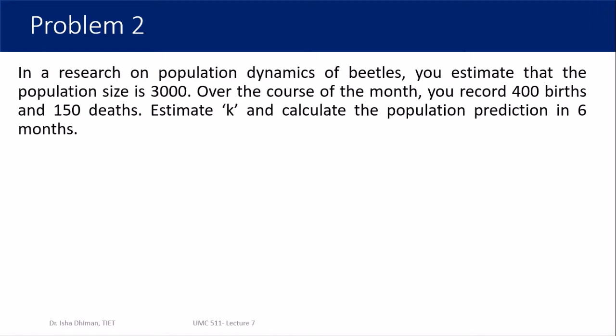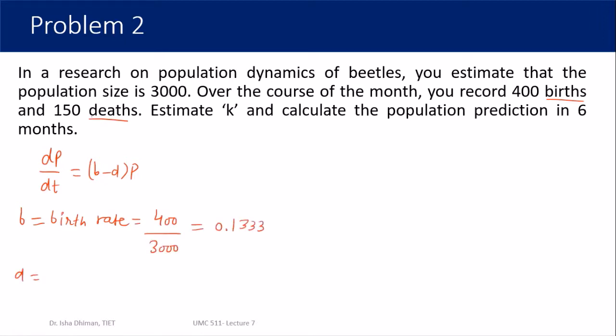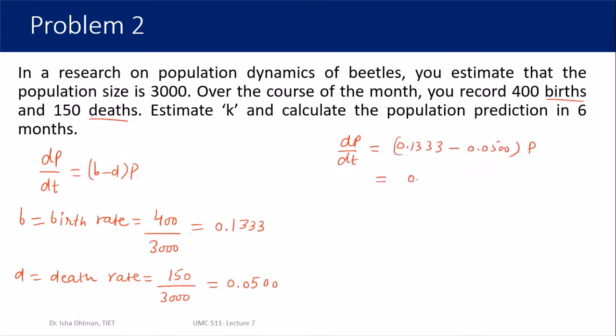Problem 2: In a research on population dynamics of beetles, the initial population size is 3000. Over the course of one month, 400 births and 150 deaths are recorded. We need to estimate k, the rate of change of population. Since the problem mentions births and deaths, the applicable model is the birth-death model: dp/dt = (b - d)·p. Birth rate = 400/3000 ≈ 0.1333, death rate = 150/3000 = 0.05.